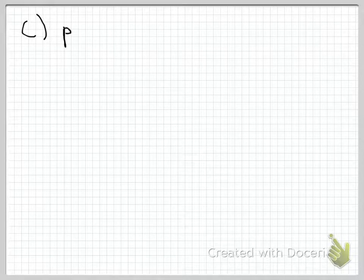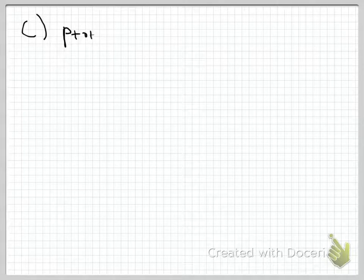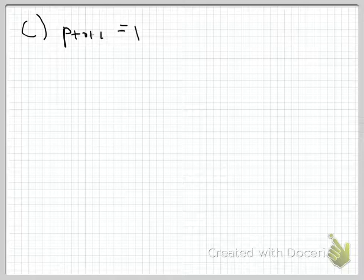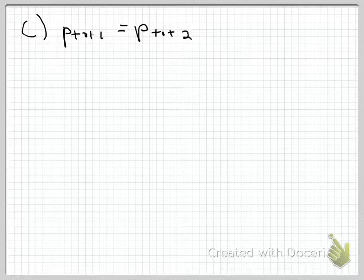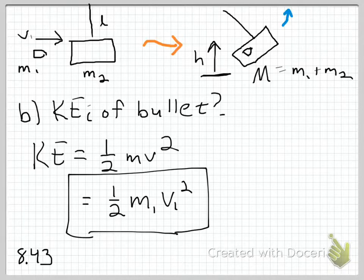Conservation of momentum simply says total momentum before is equal to total momentum after. In general, these are vectors. I'm going to be dealing with magnitudes. Just so you know, momentum is a vector.